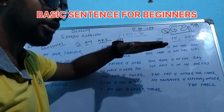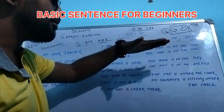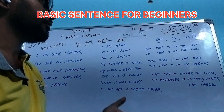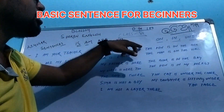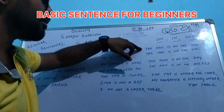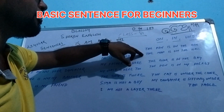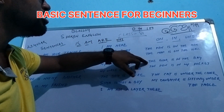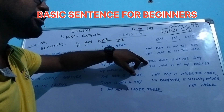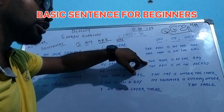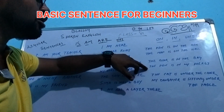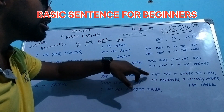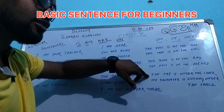On, in, under. The pen is on the box. The box is on the wall. The book is in the bag. The pen is in my pocket. The pen is under the chest. The pen is on the chair.